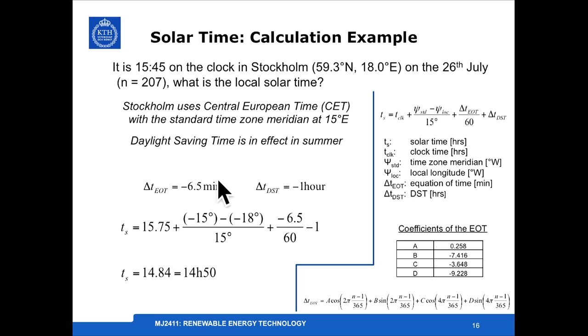We need to calculate these correction factors. The first correction factor, the easiest to calculate, is the equation of time, which is just replacing the coefficients for the specific day 207, which yields a difference of minus 6.5 minutes. Then the daylight savings time, which is minus one hour because we are behind the clock.